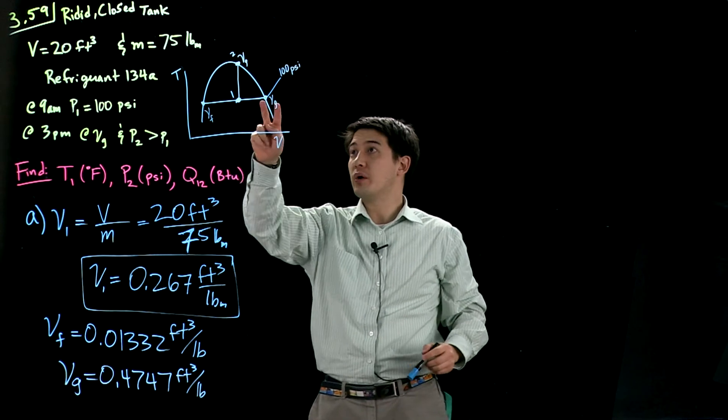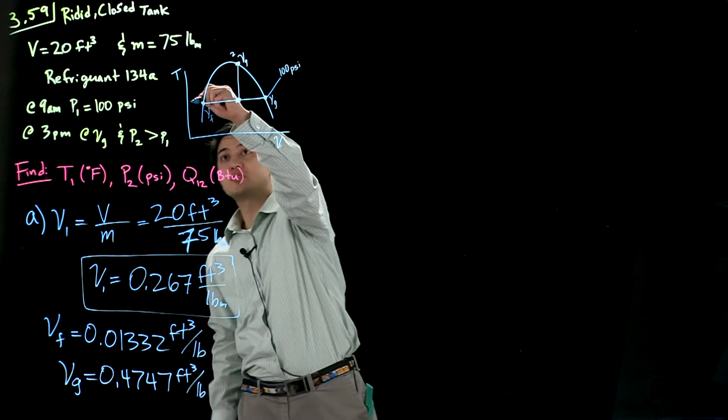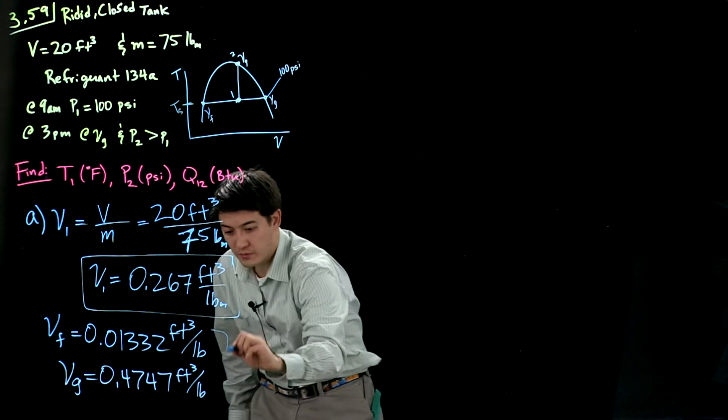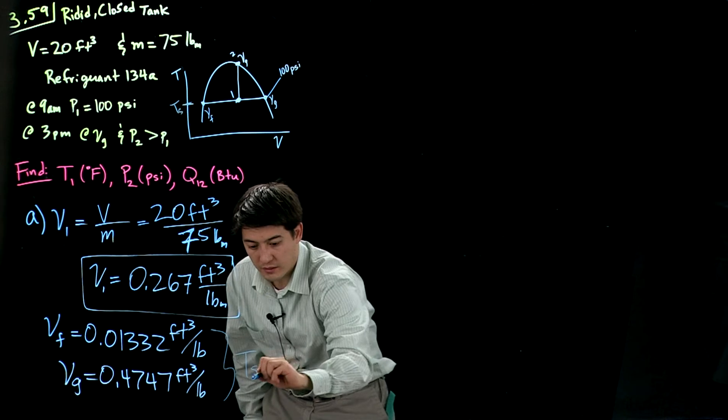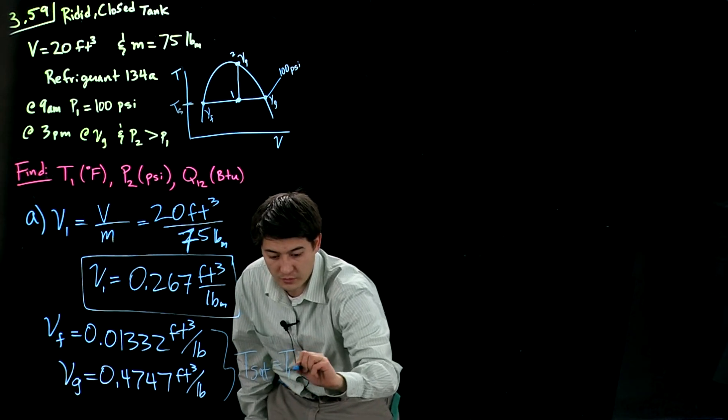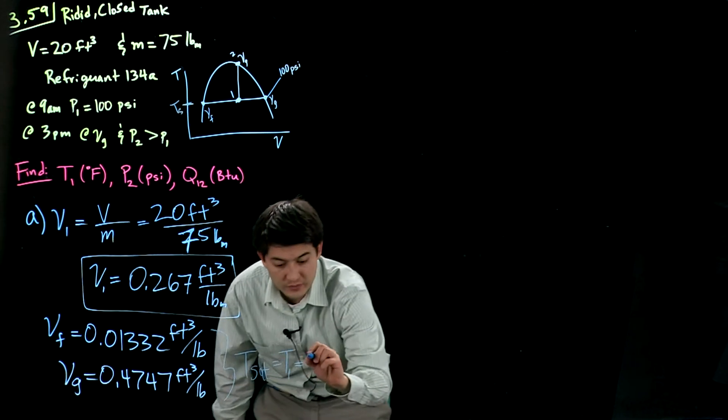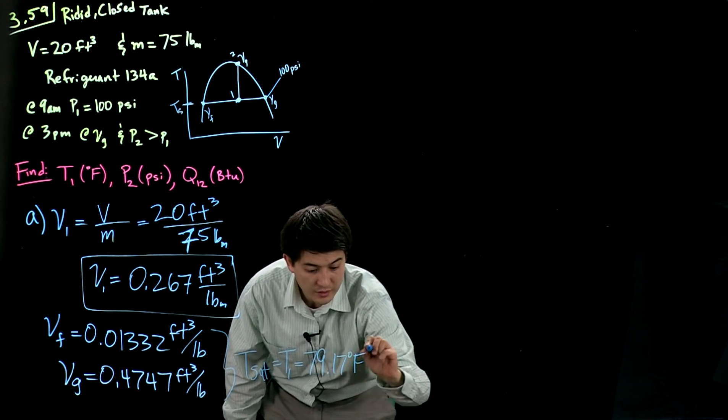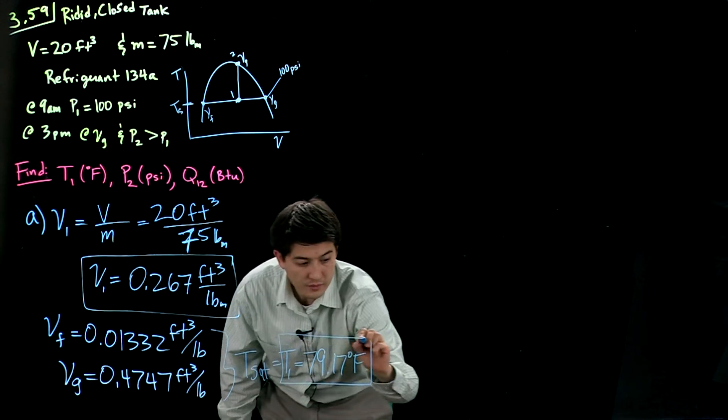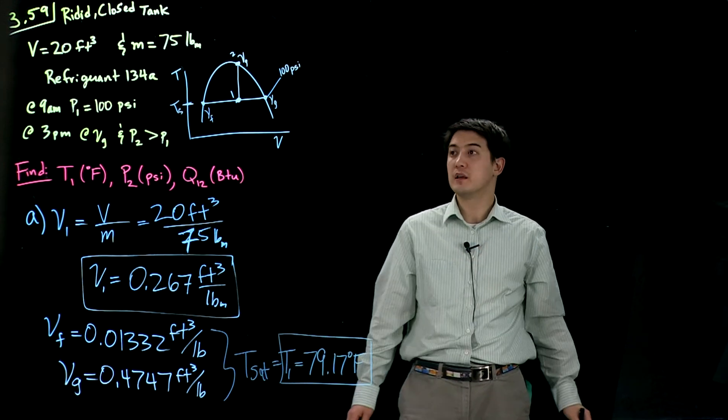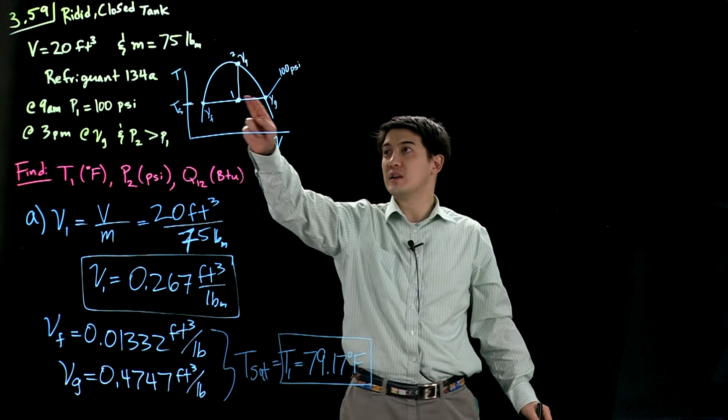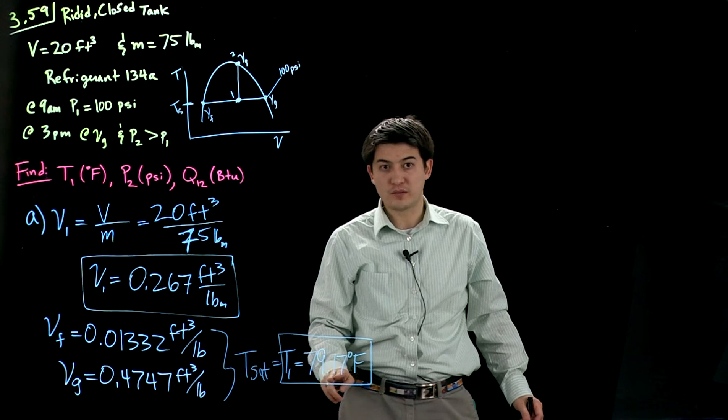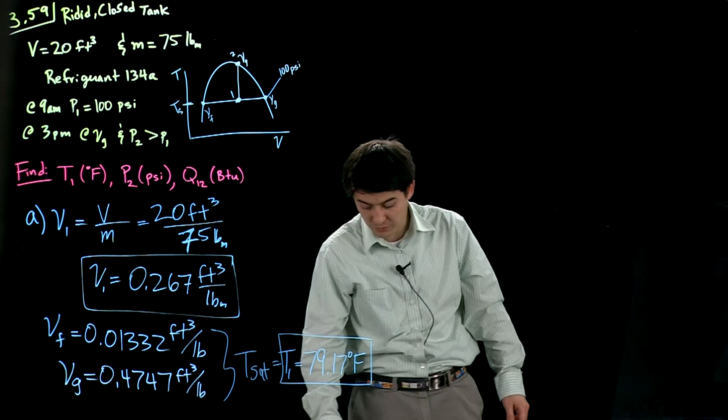Since we know that we are in between here, we can look up this saturation temperature for these two and find that we are at 79.17 degrees Fahrenheit at the initial state. So it will be same as the saturation temperature for this initial state here, which is 79.17 degrees Fahrenheit. So that's part A.